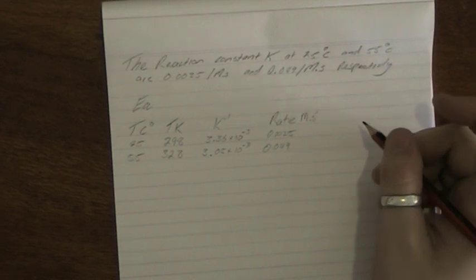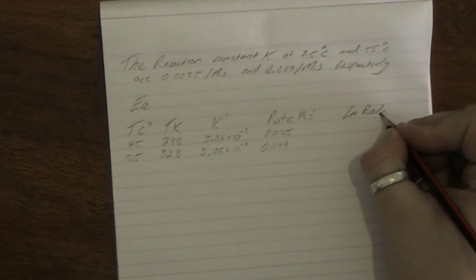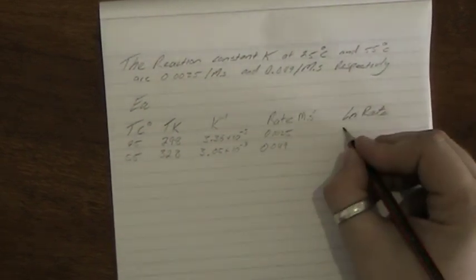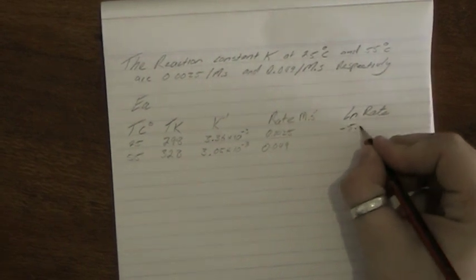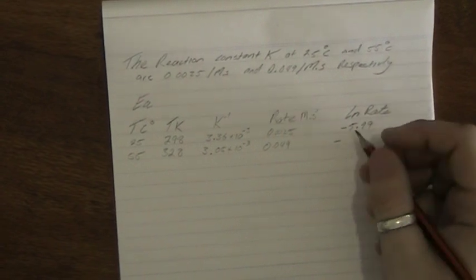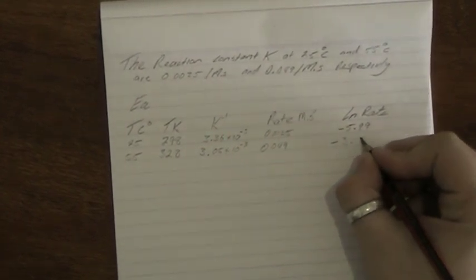Natural log of the rate to calculate the y-axis. Natural log of 0.025 is negative 5.99, and natural log of 0.049 is negative 3.02.